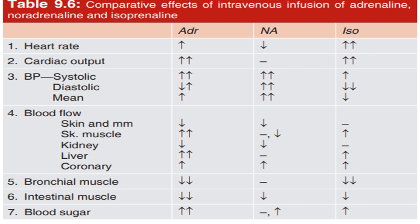Cardiac output increases due to adrenaline and isoprenaline but is unchanged with noradrenaline. Blood pressure: systolic blood pressure increases with all three — adrenaline, noradrenaline, and isoprenaline — due to increased cardiac output via beta-1 and vasoconstriction. Diastolic blood pressure falls with adrenaline and isoprenaline due to beta-2 vasodilation, but not with noradrenaline. Blood flow: skin decreases and skeletal muscle increases with adrenaline; kidney decreases with adrenaline and noradrenaline; liver and coronary vessels show increased blood flow with adrenaline.